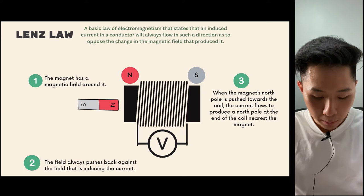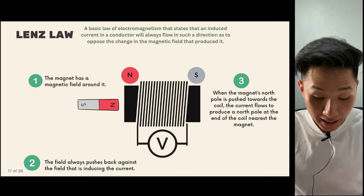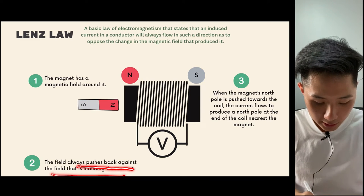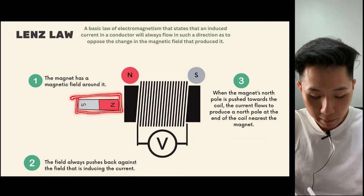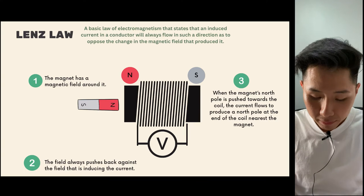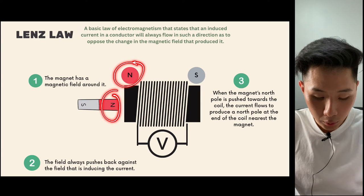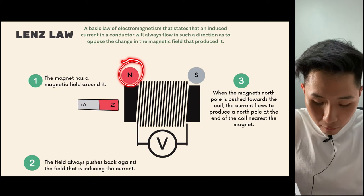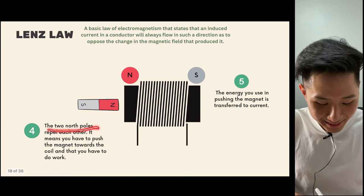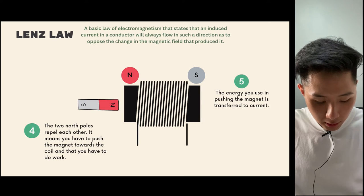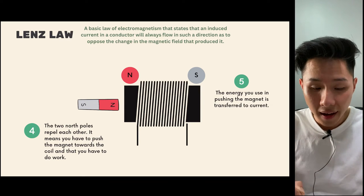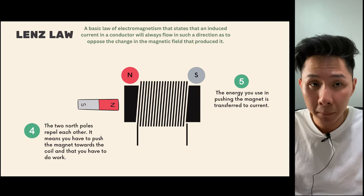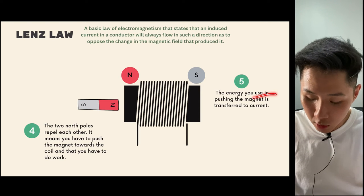If you insert the north pole of a magnet into a coil of wire, the field always pushes back against the field inducing the current. Inserting the north pole induces a polarity similar to what you're inserting — the current flows to produce a north pole facing the incoming magnet. Since two north poles repel each other, you have to push the magnet towards the coil, doing work. That work is then converted into electricity — that's how electromagnetism works.